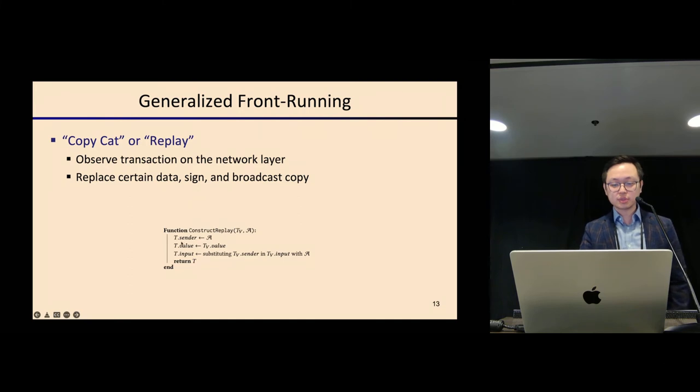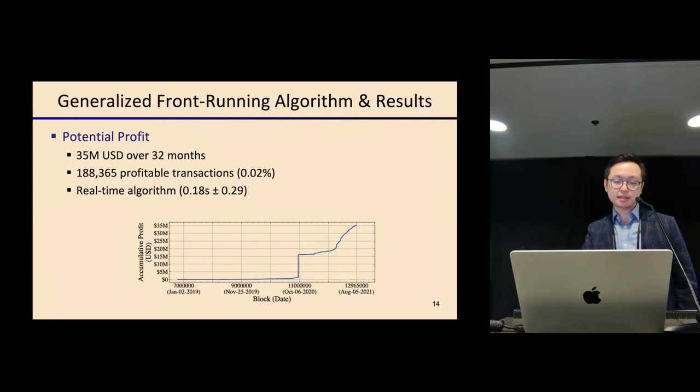The algorithm is actually rather simple. I copy the transaction and replace the sender with my own address. I also copy the value. For those not familiar with Ethereum, value is the amount of ether, the amount of token I send in the transaction. I also copy the input, and in the input, I replace the victim's address with my own address. It's basically three lines of code. This simple algorithm surprisingly could have extracted 35 million USD over the 32-month period we studied. That is 188,000 profitable transactions, roughly 0.02% of the entire transactions on Ethereum.